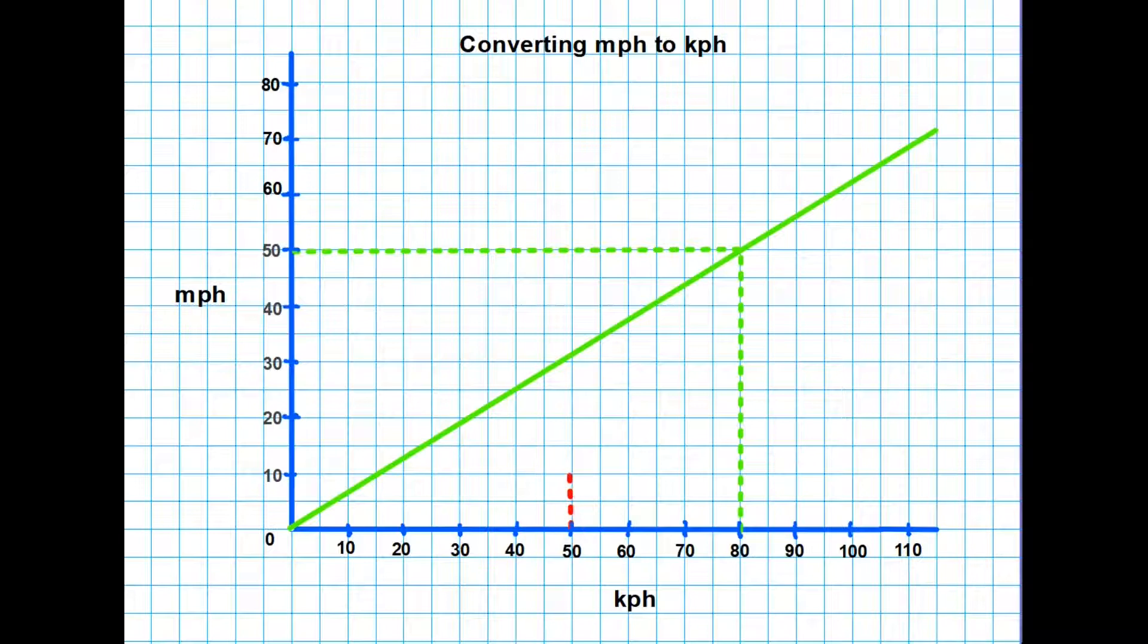It is fair to say that sometimes it doesn't convert quite as accurately. Let's say we're looking at 50 kilometers per hour. We go up to the line here and then we take our line across as carefully as we can. Because the scale is only small we have to say that 50 kilometers an hour is somewhere around 31 maybe 32 miles an hour there.